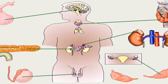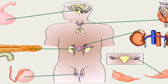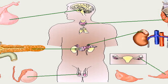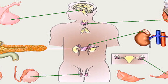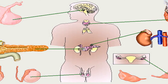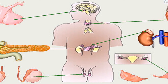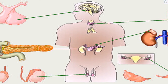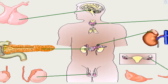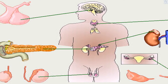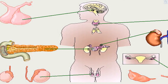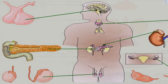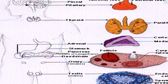The endocrine system's effects are slow to initiate and prolonged in their response, lasting from a few hours up to weeks. The nervous system sends information very quickly and responses are generally short-lived. Hormones are substances — chemical mediators — released from endocrine tissue into the bloodstream.